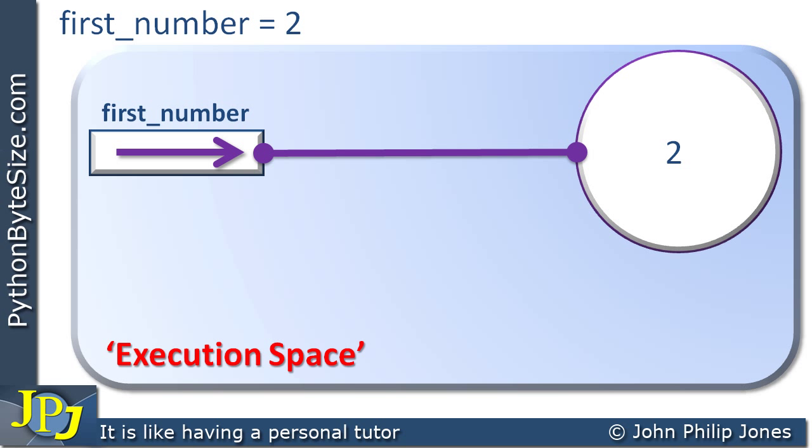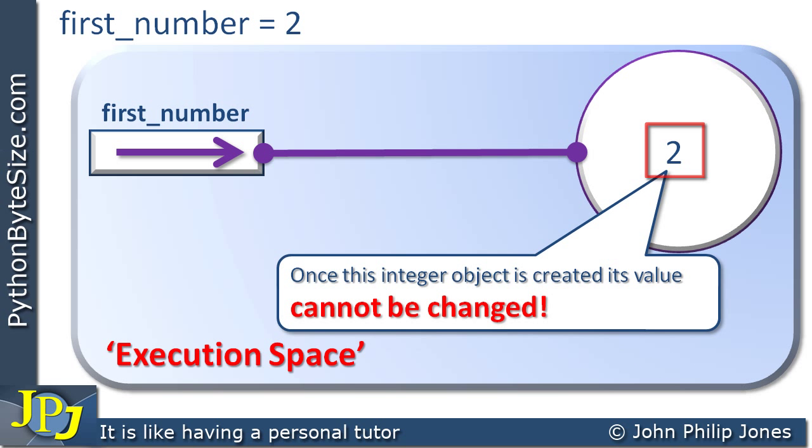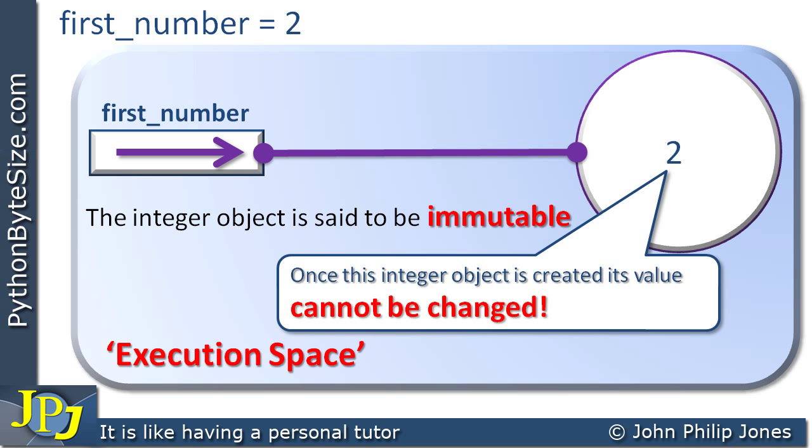Now something important happens here. You see, what we're dealing with is an object, which is referred to as an integer object, because we're storing an integer in it, i.e. 2 is an example of an integer. And this sounds a bit bizarre, but once this integer object is created, its value cannot be changed. The integer object is said to be immutable, meaning it cannot be changed. But this seems not to make much sense.